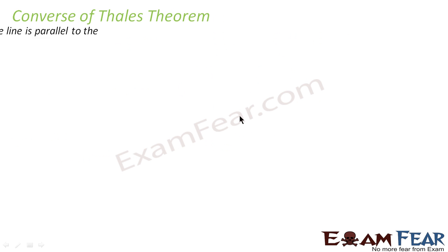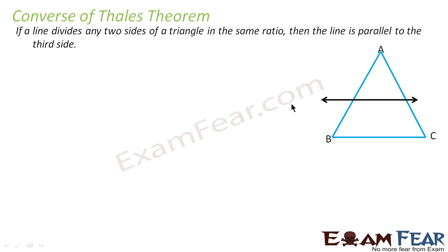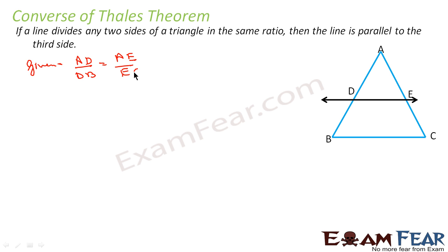Let us prove this. Let us understand the converse of Thales theorem once again. If a line divides any two sides of a triangle in the same ratio, then the line is parallel to the third side. So, given a triangle with points D and E, if AD by DB is equal to AE by EC, we have to prove that DE is parallel to BC.